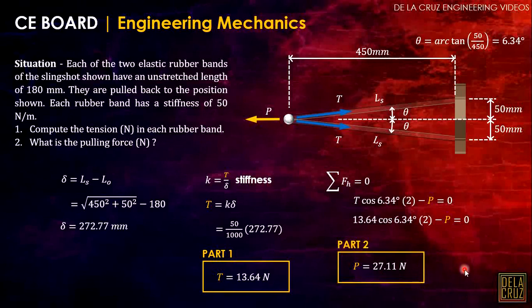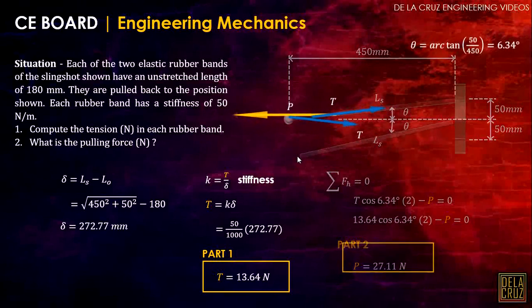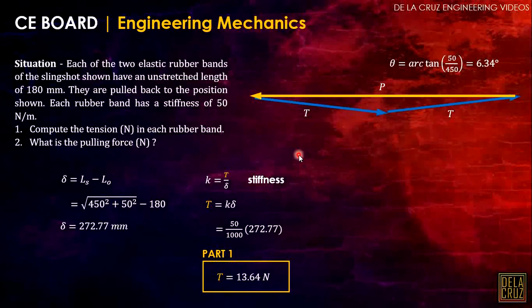That's it. Very easy. Actually, we have another option here. Take note, this is a concurrent force. The forces meet on one point, so we can use the force polygon. Three forces, so it's easier. This is just another option. It's up to you which one to use. Take note, this T has angle theta with the horizontal.